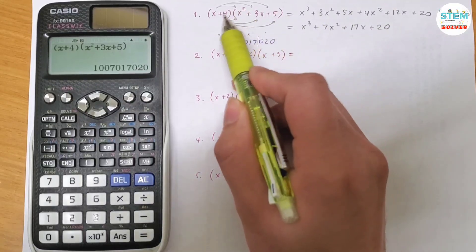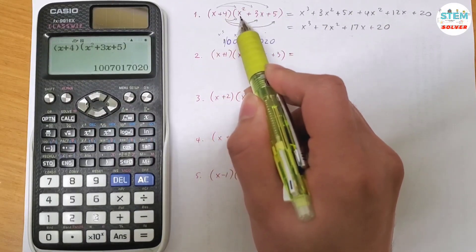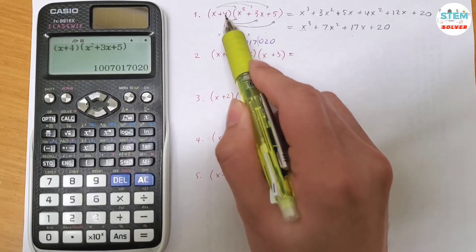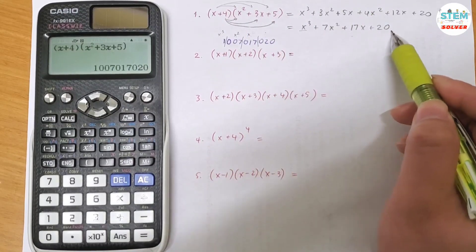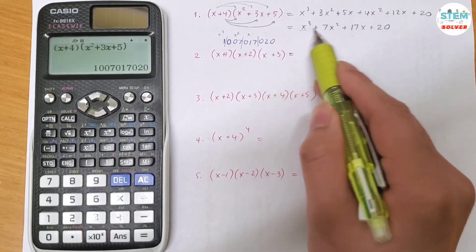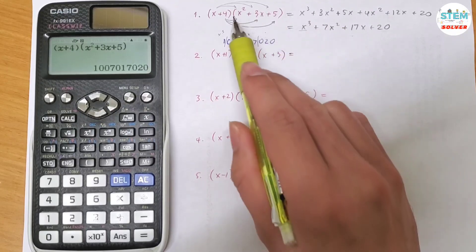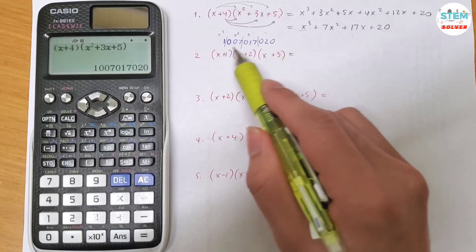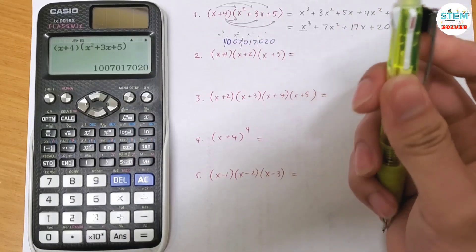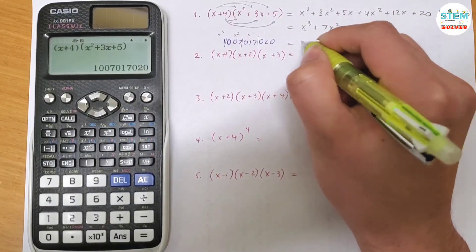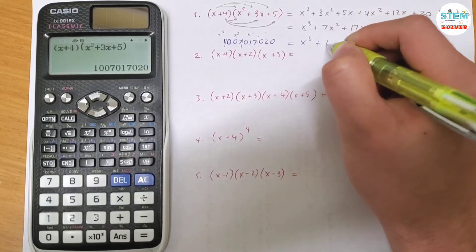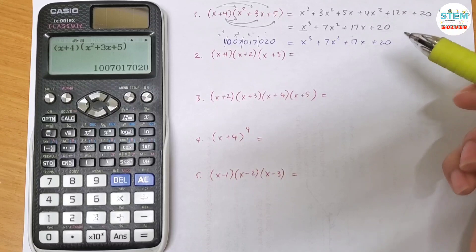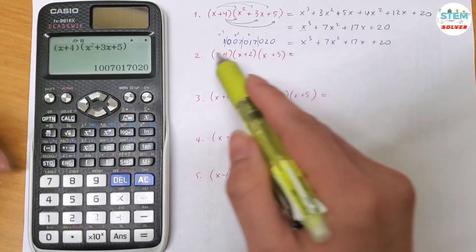Plus 20 for the constant. You can quickly double-check by multiplying the constants: 4 times 5 is 20, so I got a constant of 20, and this also gives me 20. So I can rewrite the expanded form as x cubed plus 7x squared plus 17x plus 20.